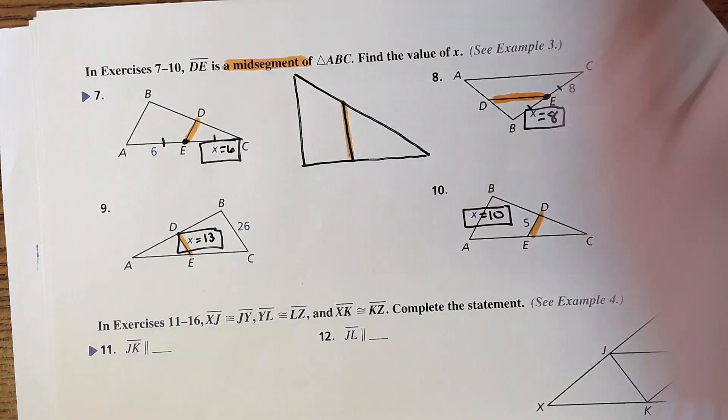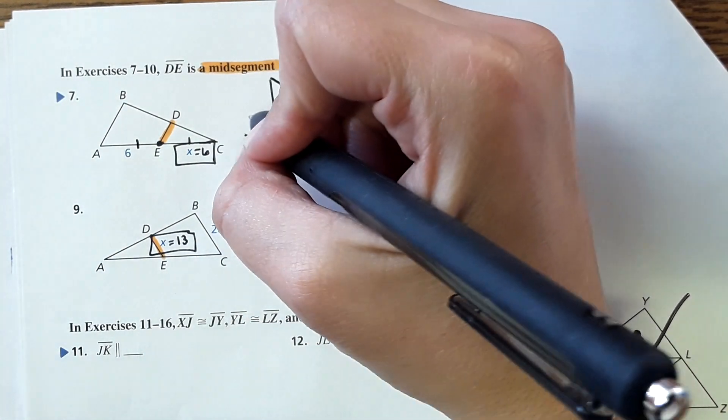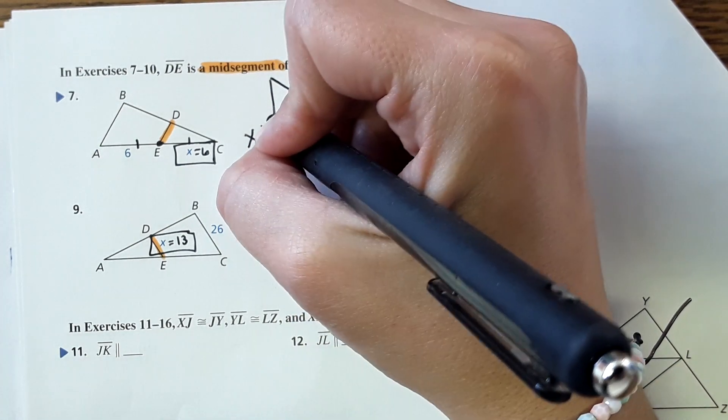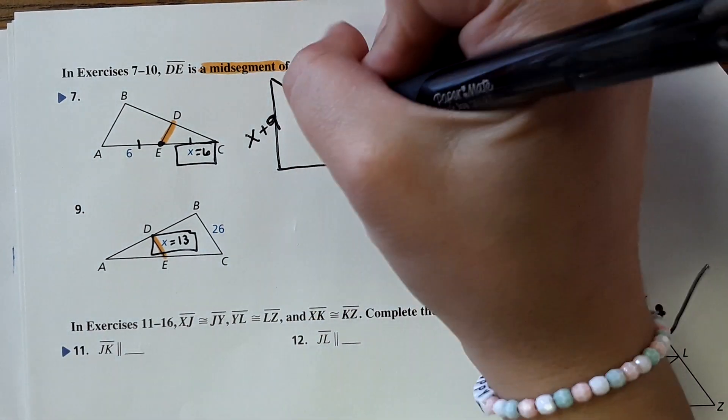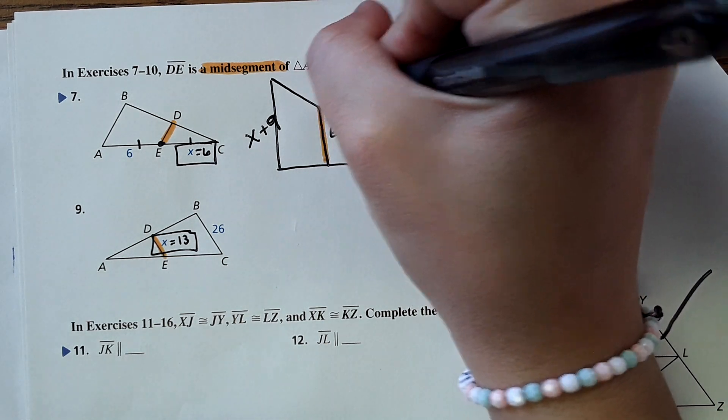That's eight. Let's say this is x plus nine, and this is two x minus three.